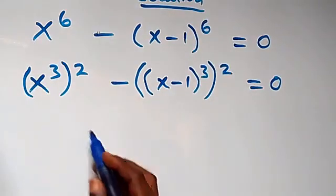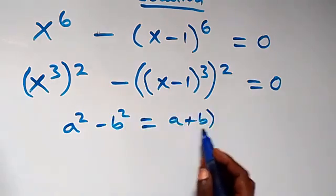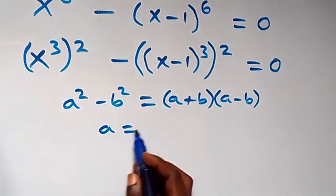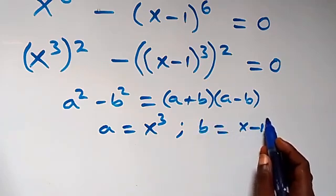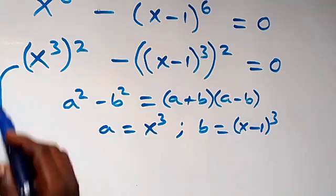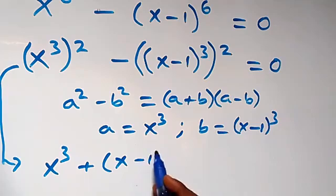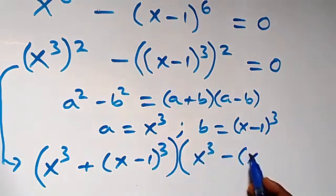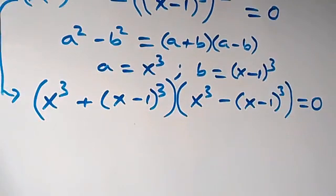From here, when we have a squared minus b squared, that is the same as a plus b into bracket a minus b. From what we have here, a is x raised to power three and b is x minus one raised to power three. So this can be written as x cubed plus bracket x minus one cubed, times x cubed minus bracket x minus one cubed, equals zero.